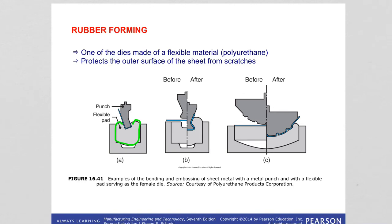In this image you are seeing different variations — different shapes and different types of bending operations that can be done using rubber forming.